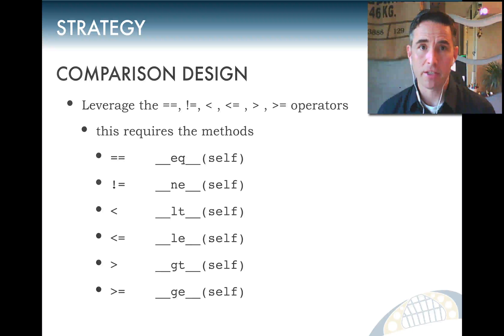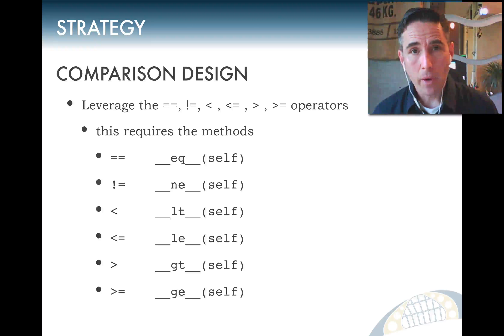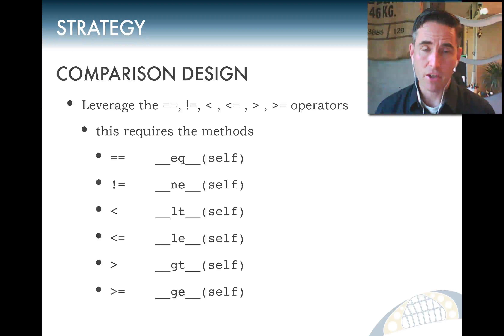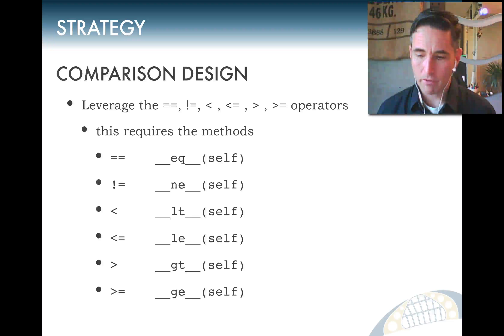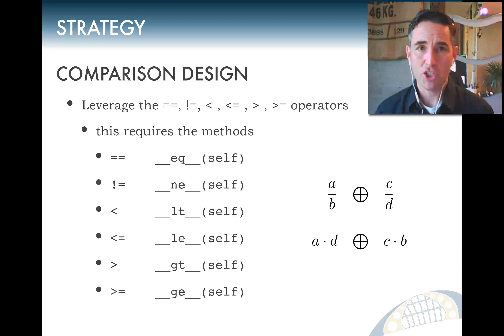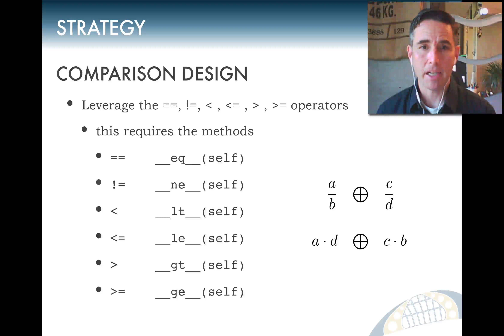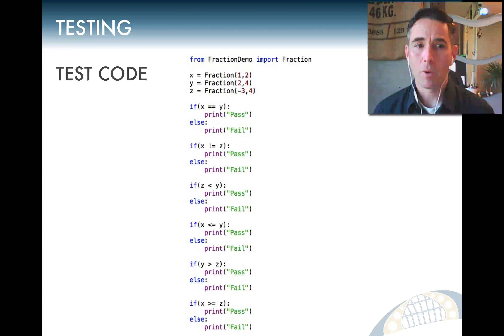The next thing we need is comparison operators: double-equals, not-equals, less-than, less-than-or-equal, greater-than, and greater-than-or-equal. For equality, since our fractions are already reduced, both numerators and denominators must match. For less-than, we use the mathematical relationship: a/b < c/d if and only if a*d < c*b.